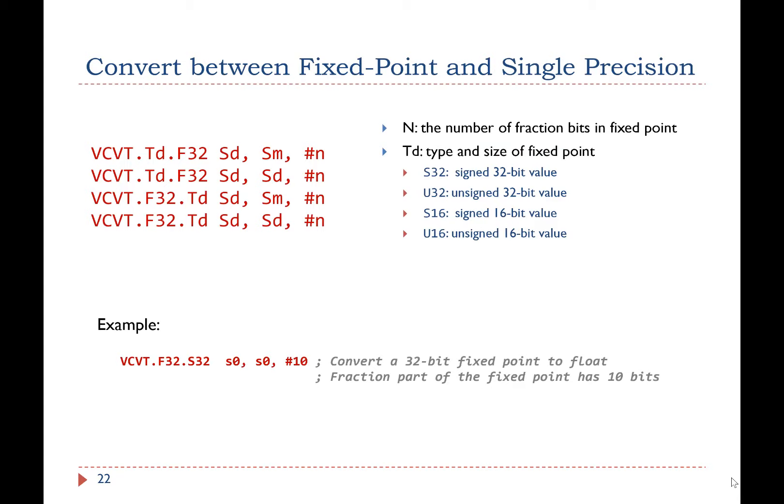FPU can also support conversion between a float and a fixed point. These assembly instructions convert a 32-bit fixed point to a float. The immediate number 10 specifies that the fraction part of the fixed point has 10 binary bits.